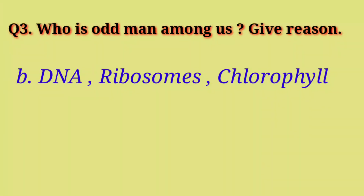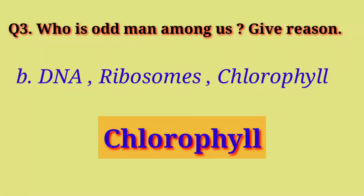B. DNA, Ribosomes, Chlorophyll. The answer is Chlorophyll. DNA and Ribosomes are essential for protein synthesis, whereas Chlorophyll is a green pigment essential for photosynthesis.